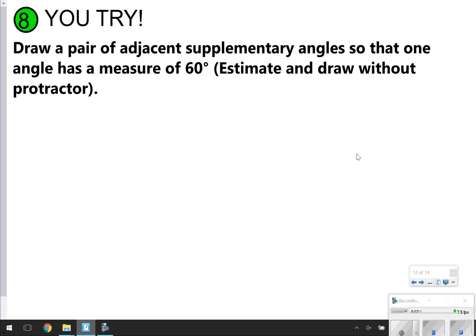Number 8 is the last question that you will try. It says, draw a pair of adjacent supplementary angles so that one angle has a measure of 60 degrees. You won't get a protractor for this one. So you're just going to basically estimate what do you think 60 degrees look like and make sure that the other angle that you draw will be adjacent to the 60 degree angle, and it'll make it supplementary. Go ahead and take the time now to pause really quick. Answer this question. Then click play to end the video.